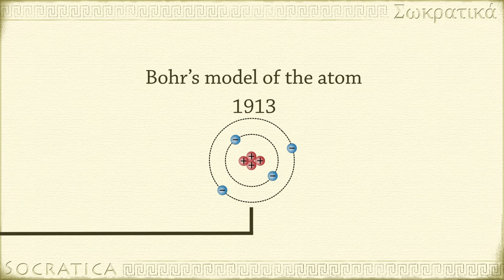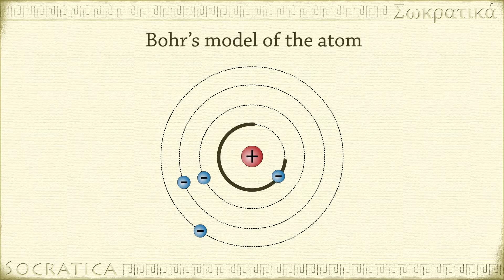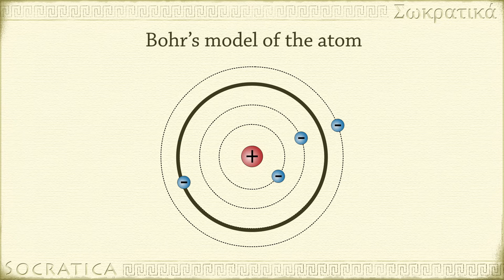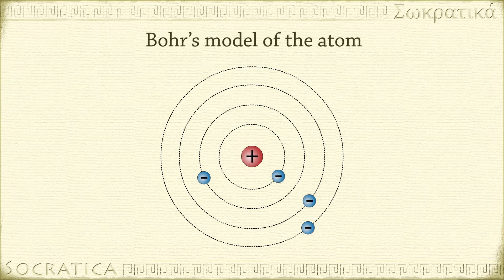Niels Bohr, who did post-doctoral work in Rutherford's lab, came up with an elegant solution to the collapsing atom problem. In a publication in 1913, Bohr suggested that the negatively charged electrons are found in concentric circular orbits around the positively charged nucleus, much like how the planets orbit the sun. We sometimes refer to the Bohr model as the planetary model. According to this model, the electrons are found at fixed energy levels, orbiting at fixed distances from the nucleus. The path closest to the nucleus has the lowest energy level, and the energy is generally higher the farther the orbits are from the nucleus. The farther a negatively charged electron is from the positively charged nucleus, the less attraction the electron feels.